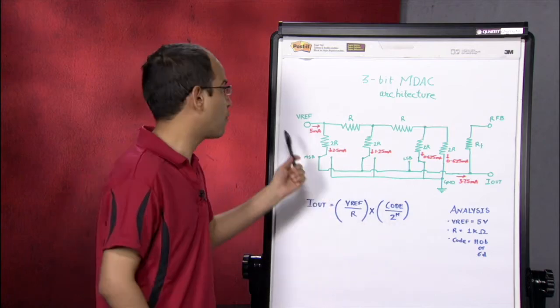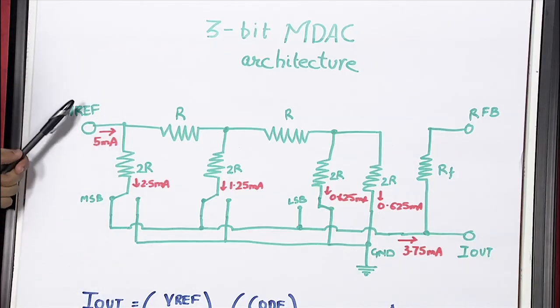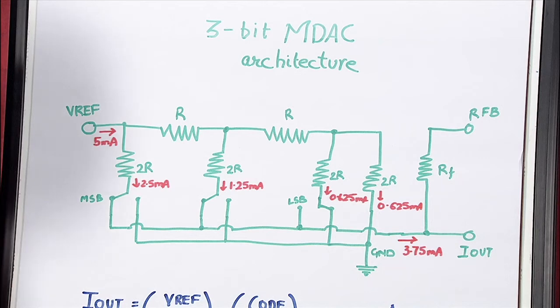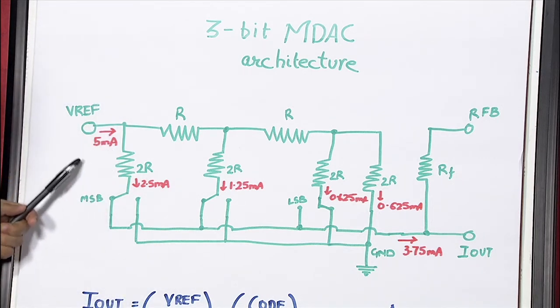Now, going back to how much current flows into this VREF pin, it would be 5 volt divided by R, which we calculated, which is 1k. The current turns out to be 5 mA.